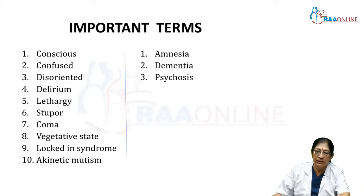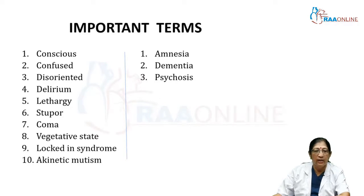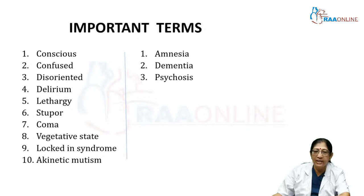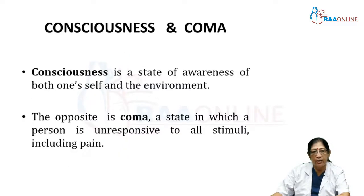We also need to understand lethargic persons and the difference between stupor, coma, vegetative state, locked-in syndrome, and akinetic mutism. These have to be differentiated from amnesia, dementia, and psychosis.